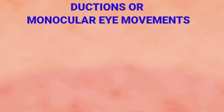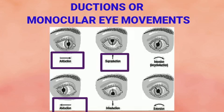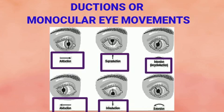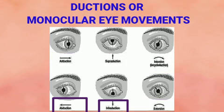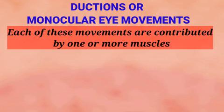Ductions or monocular eye movements are movements produced by a single eye. The movements are: adduction, abduction, supraduction (elevation), infraduction (depression), incycloduction (intorsion), and excycloduction (extorsion). In duction movements, each movement is contributed by one or more muscles.